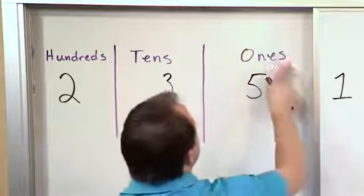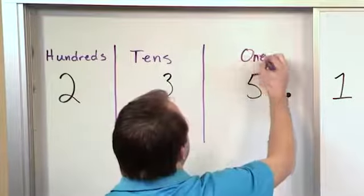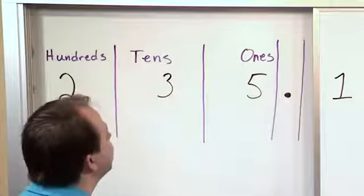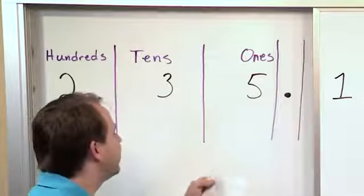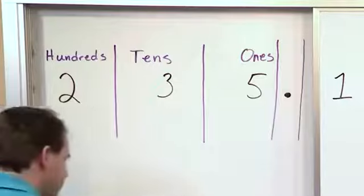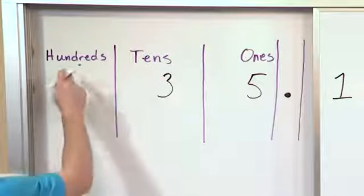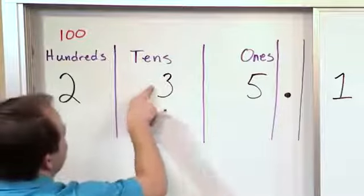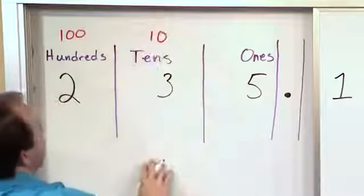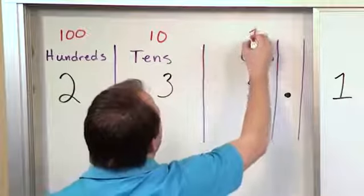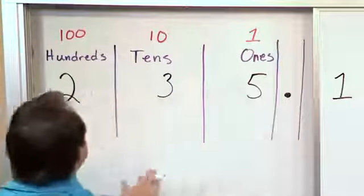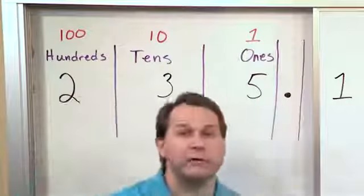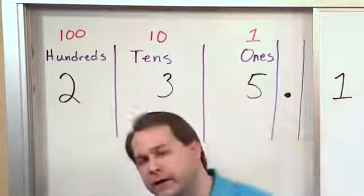All of this is stuff we have learned many times in the past. We have hundreds, tens, ones, and a decimal point. Every number in the hundreds place is worth 100, every number in the tens place is worth 10, every number in the ones place is worth one. That's how we get 235 — two of these is worth 100, that's 200; three of these is worth 10, that's 30; and five of these is worth just one. That's how we construct everything on that side of the decimal point.